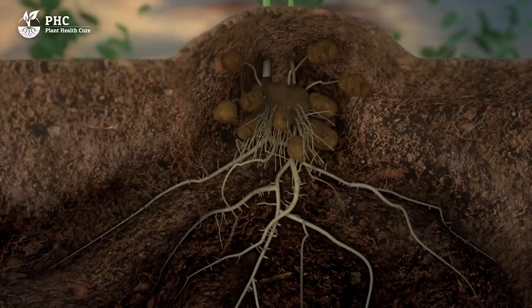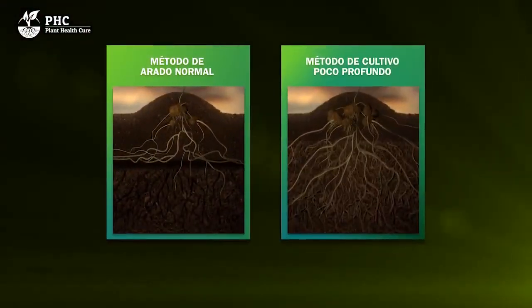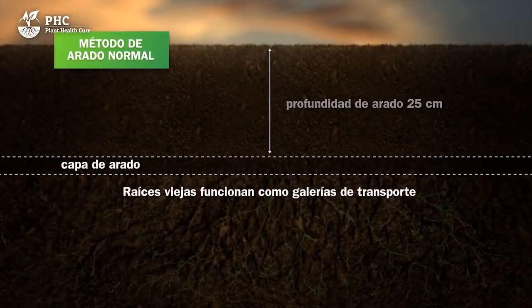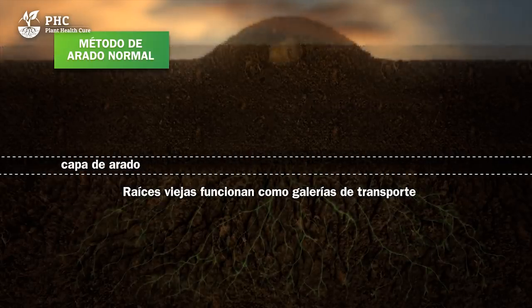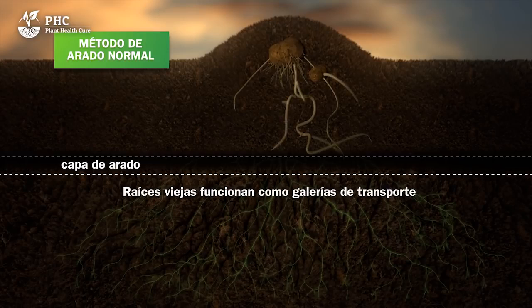This is costly for the farmer and a disaster for the soil. There are much better methods. In general, it is not well known that plant roots develop better in an old root zone. Here we see the method of plowing by turning the soil 25 cm. In this way, it takes much more effort for the plant to reach the thousands of mini tunnels made by other plants with their roots.